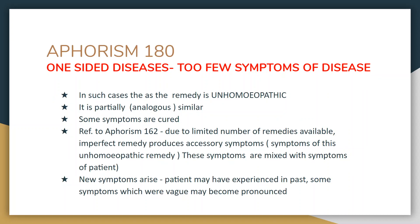In such cases, the remedy is unhomeopathic because it is only partially similar, and only some symptoms are cured. As discussed in aphorism 162, where limited remedies are available, an imperfect remedy is given and it produces accessory symptoms. Accessory symptoms are the symptoms of this unhomeopathic remedy — new symptoms produced by this unhomeopathic remedy which get mixed with the symptoms of the patient.